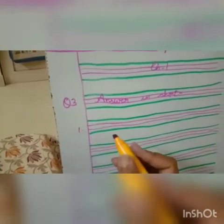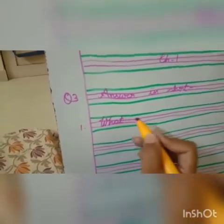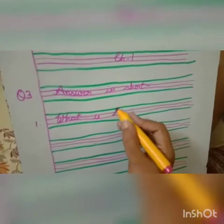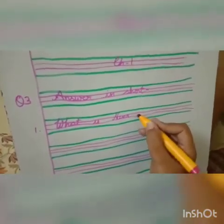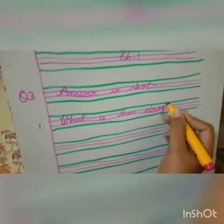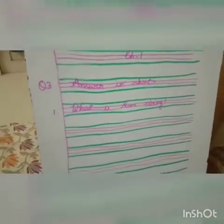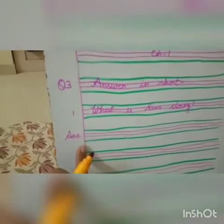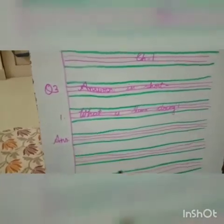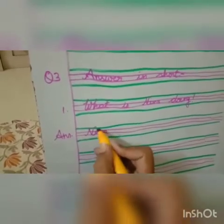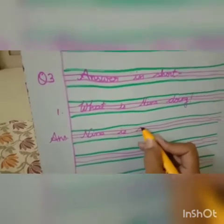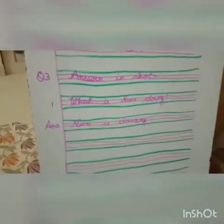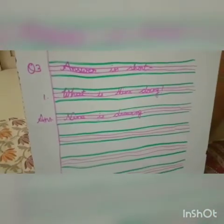Number 1: What is Nina doing? We are asking a question, so we are putting a question mark. Now the answer — you will write in the margin: ANS. Nina is drawing. D-R-A-W-I-N-G. Drawing. What is Nina doing? Nina is drawing.